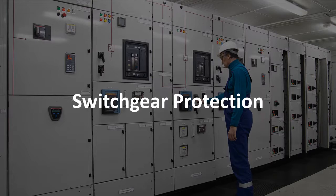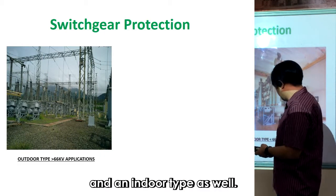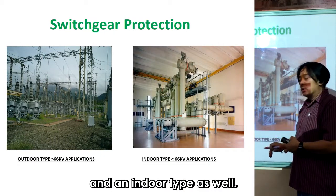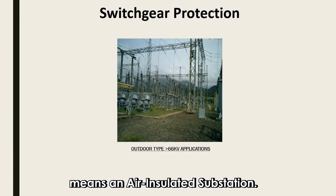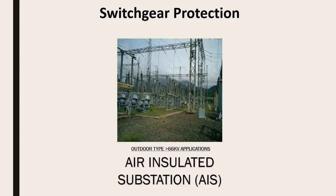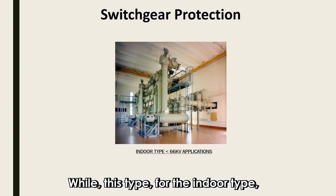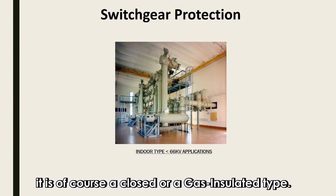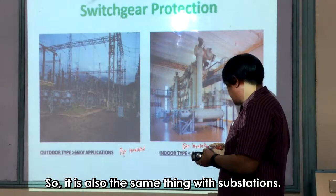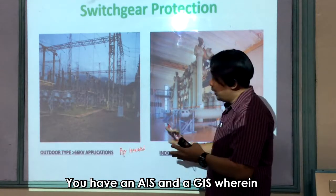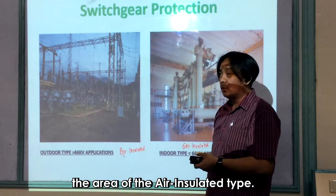As we have discussed, a switchgear can be an outdoor type and an indoor type. It is similar to a substation: an outdoor type means an air-insulated substation (AIS), while the indoor type is a closed or gas-insulated type (GIS). GIS occupies about one-fifth the area of the air-insulated type.